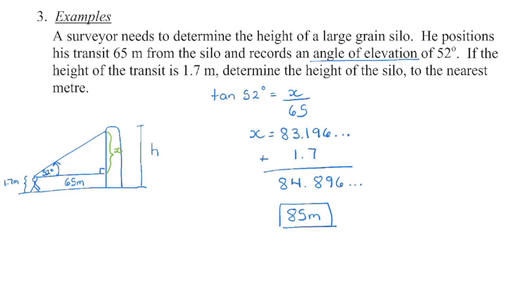The first thing you always want to do is draw the picture. In the first example, we have a surveyor standing and looking from his transit, which is 65 meters from the grain silo. Assume any building goes straight up at 90 degrees, so I put my 90 degrees there. The transit records an angle of elevation of 52 degrees. So from the horizontal, I am looking up at 52 degrees to the top of the silo.